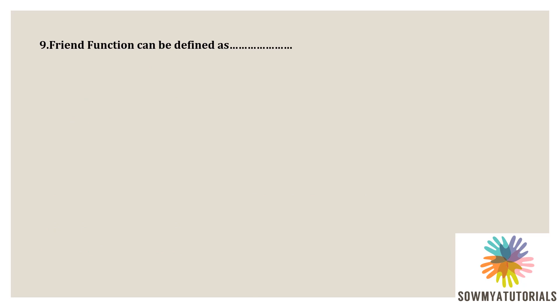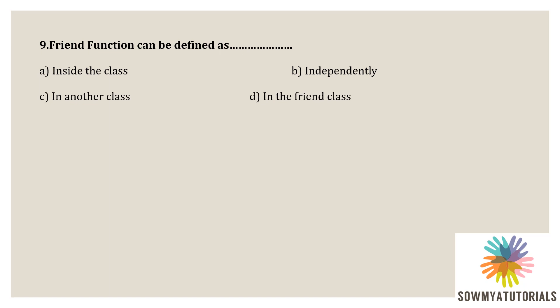Next question: a friend function can be defined as blank. Options are: A) inside a class, B) independently, C) in other class, D) in the friend class. A friend function is a non-member function that is a friend of a class. It is declared within a class with the prefix 'friend', but defined outside the class like a normal function without the prefix 'friend', so it can access public data members. Since the friend function is declared within a class, the correct answer is option A — inside the class.